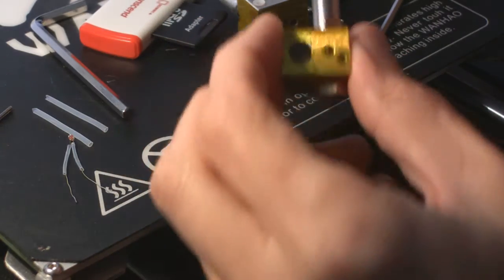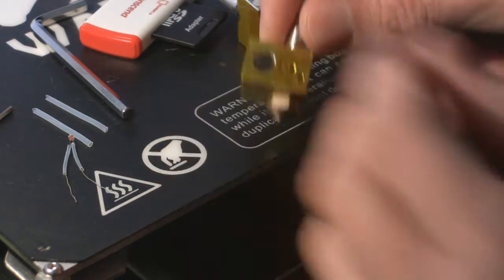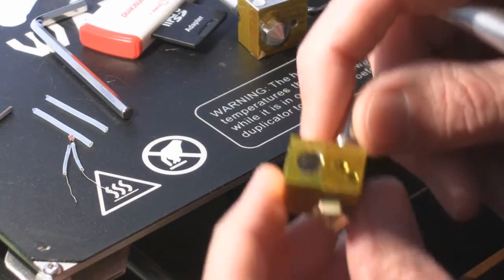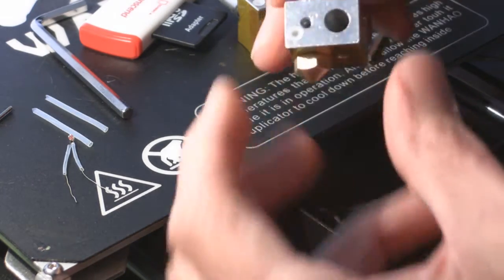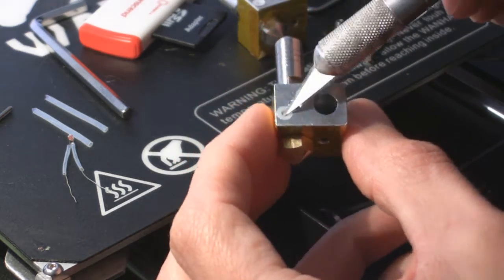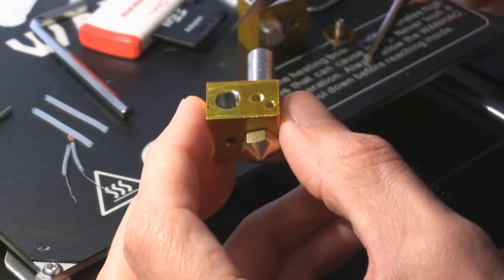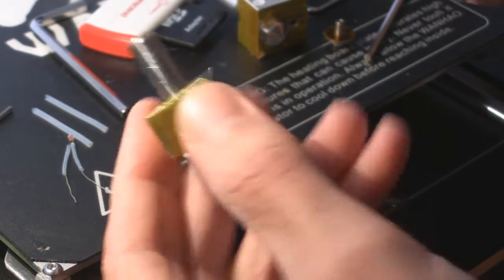This next mod is really simple. We're just going to use Kapton tape here. I've covered both holes. Like I said, this is where we put the PTFE tubing on this side, and on this side we have the Kapton trick I'm going to teach you.